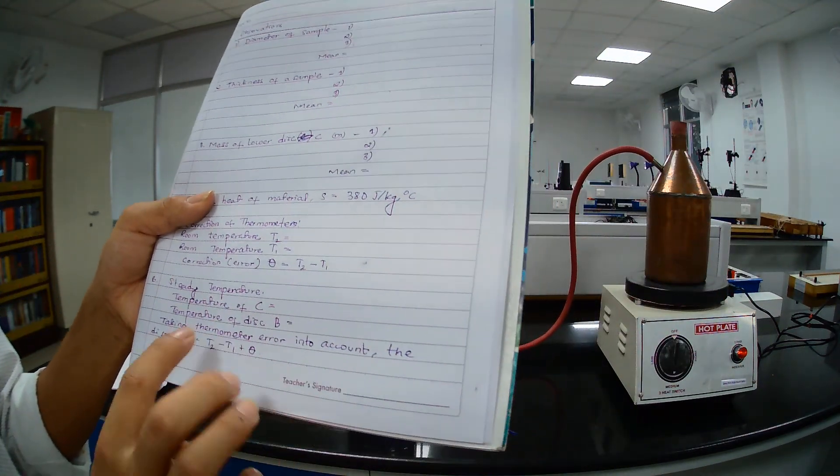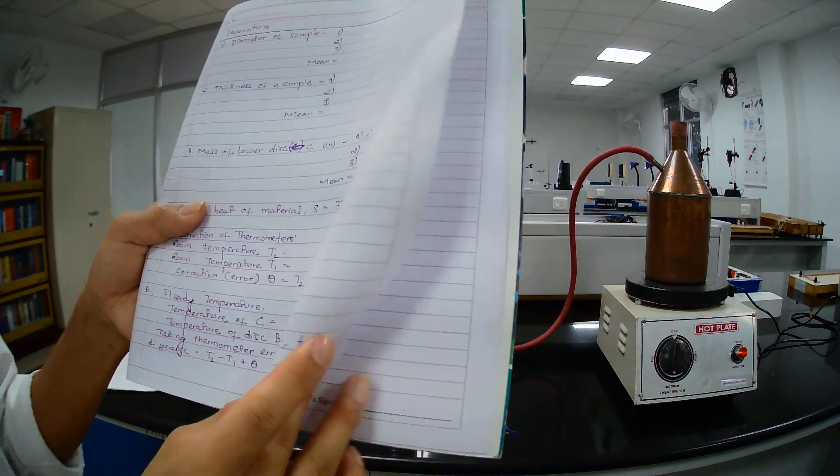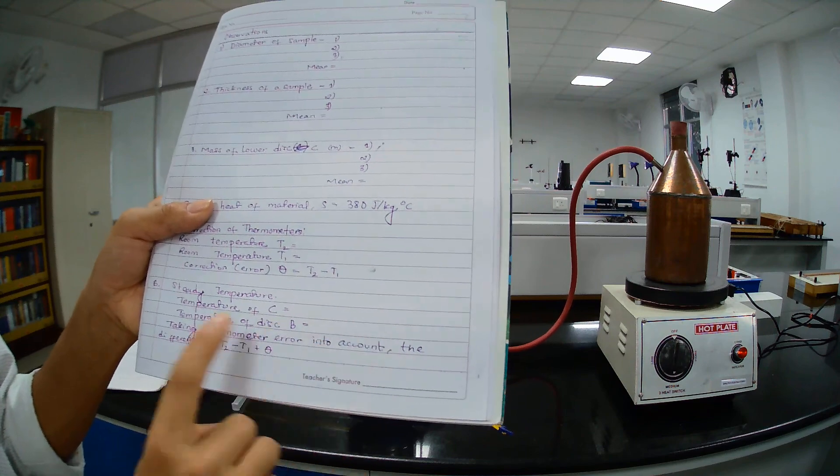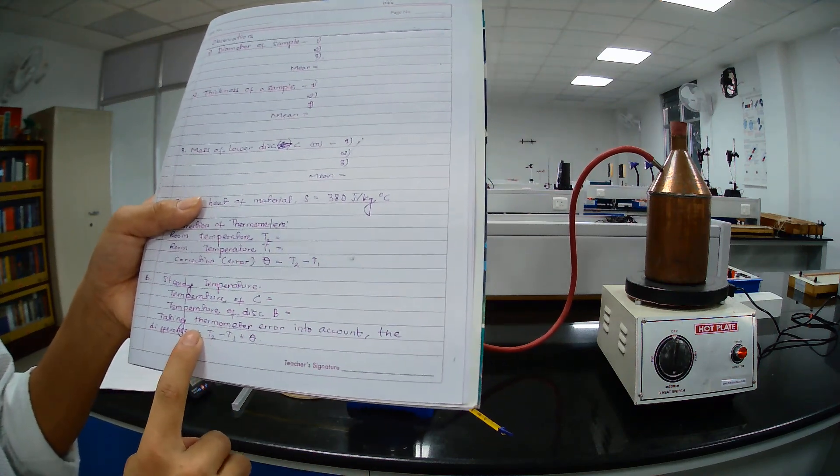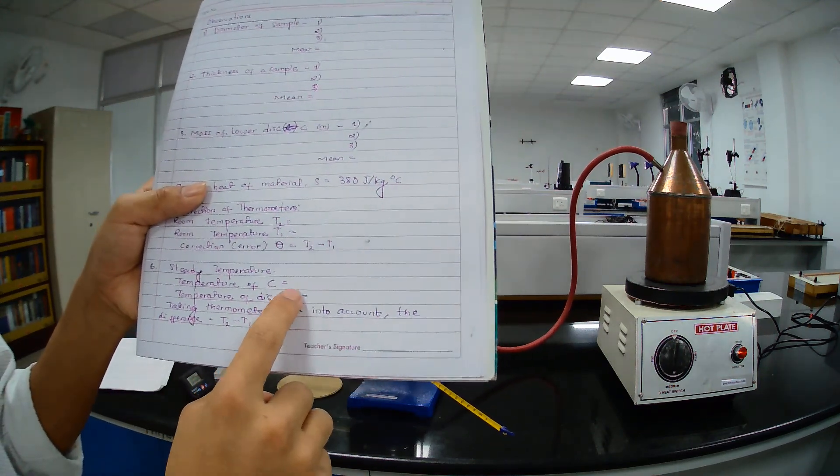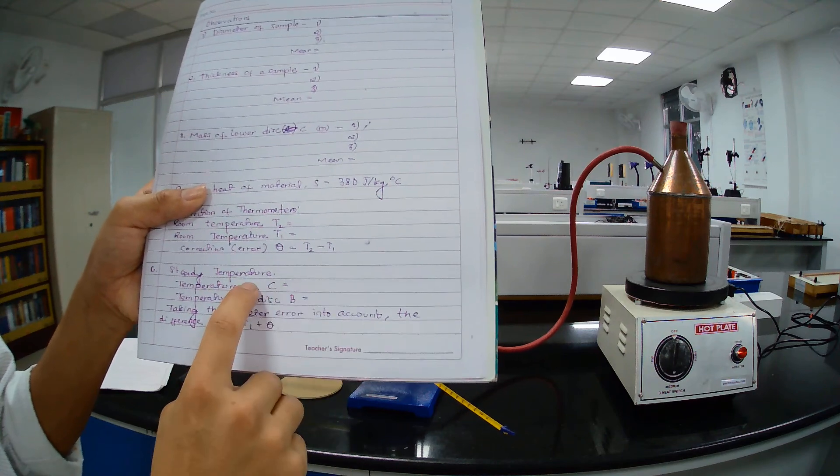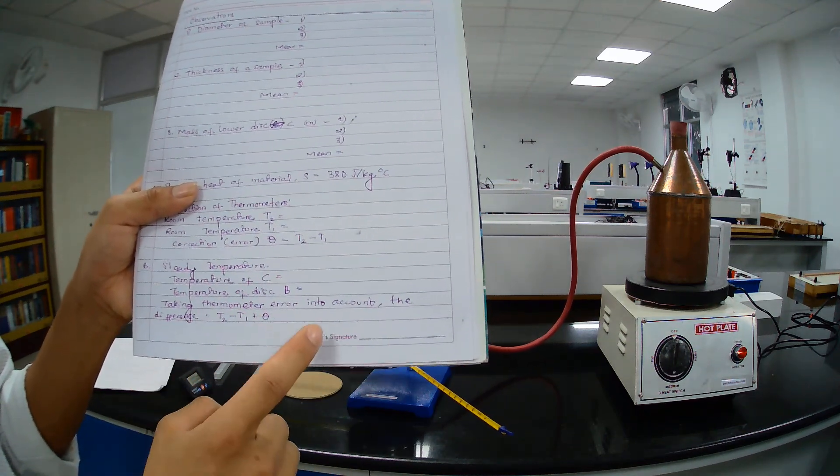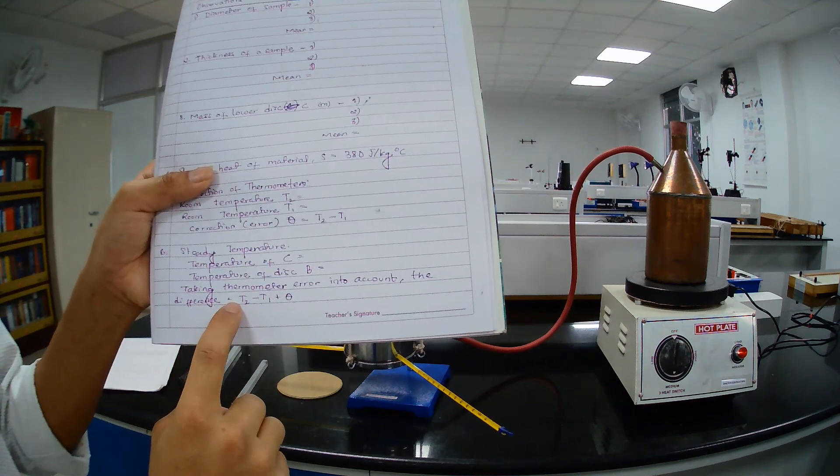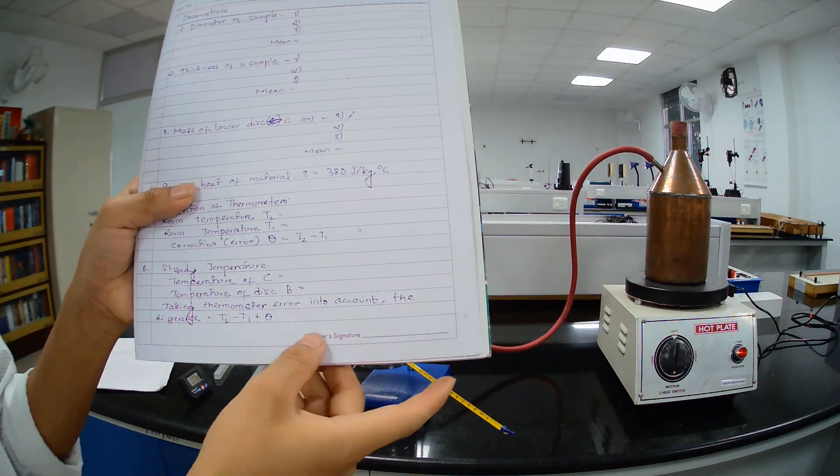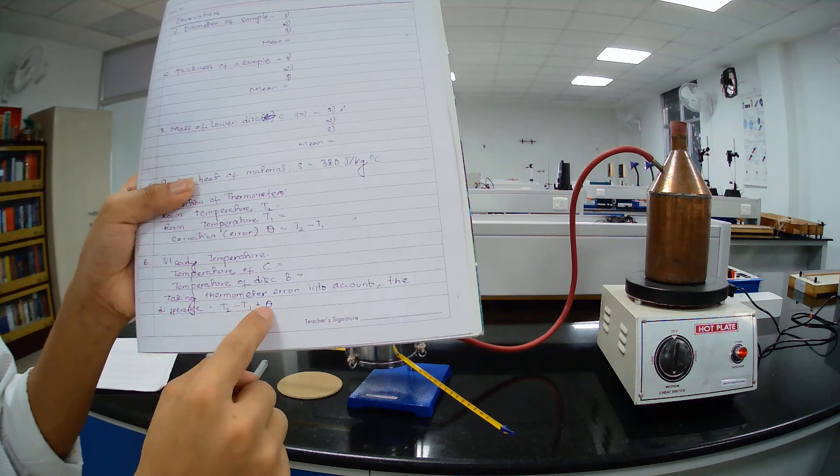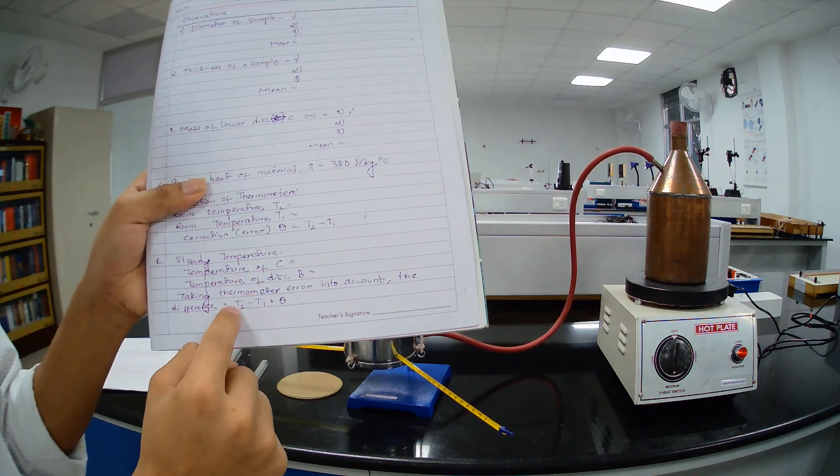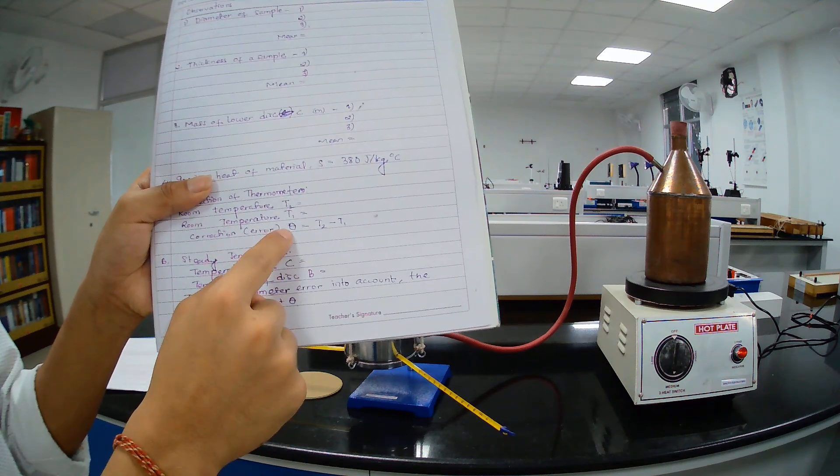Note that temperature and from these two, we have for this B, we have temperature T2 and here it is T1. Now calculate that difference T2 minus T1. And this is error. Don't confuse this theta with this T2 minus T1 with this theta.